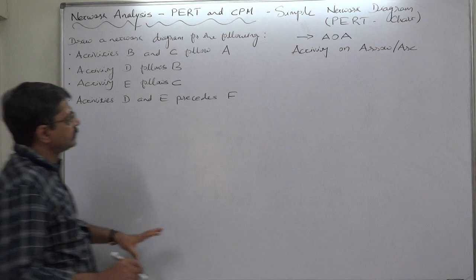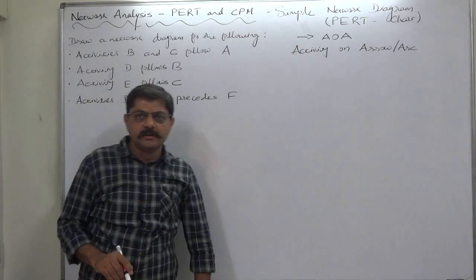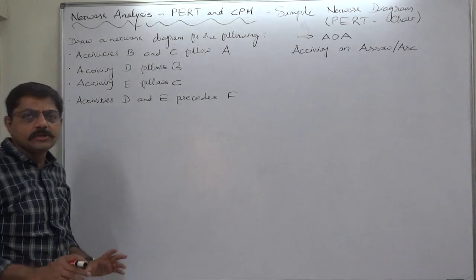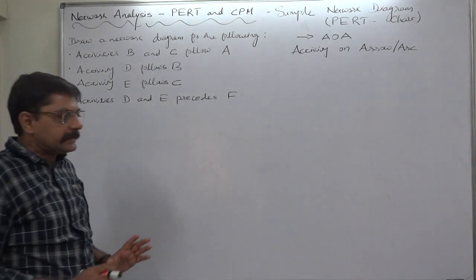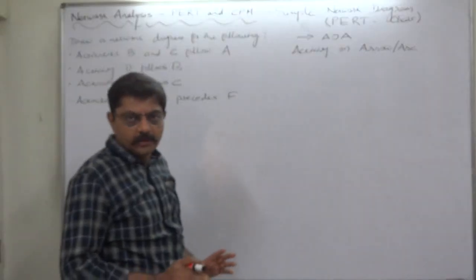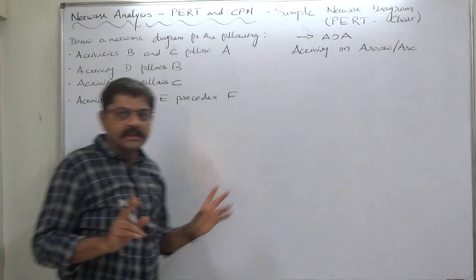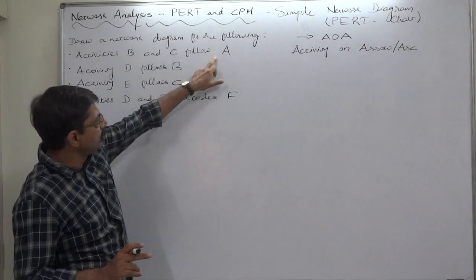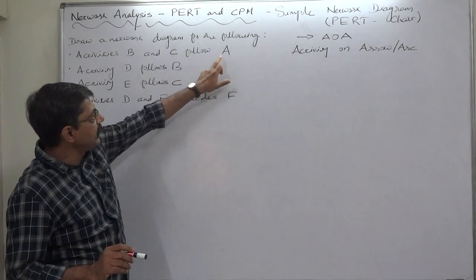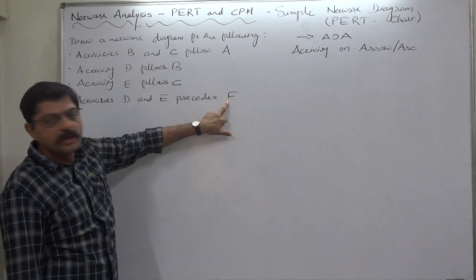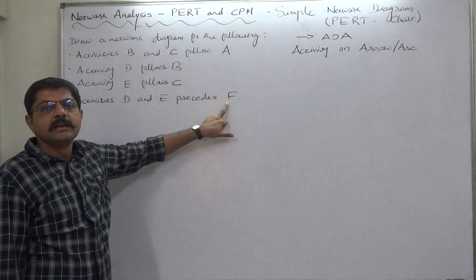F alone is the end or finishing activity. To think this right in the inception will make the overall image of the diagram clear in our mind. How can we start drawing and how can we conclude? See, that is a simple thing. On the basis of this information the diagram starts with only one arrow and the diagram ends with only one arrow of activity F.